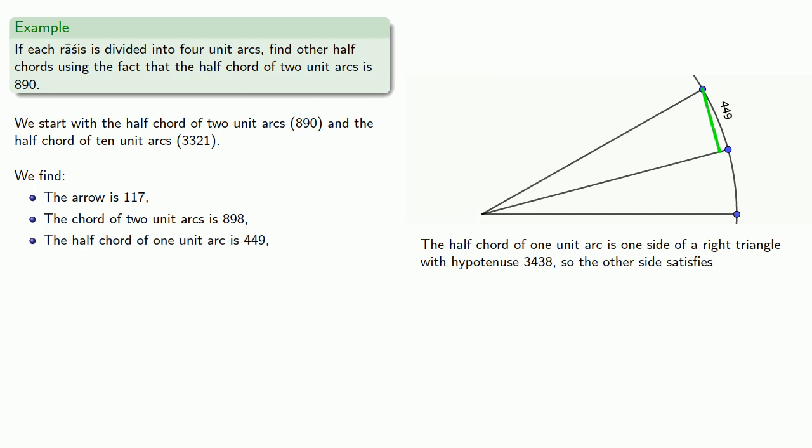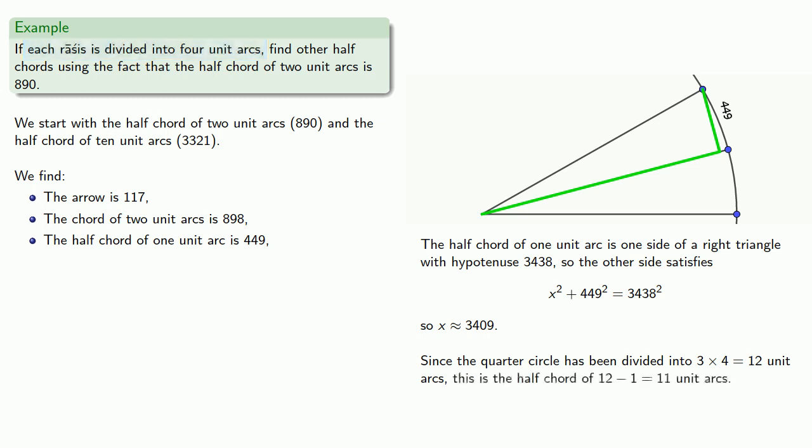And again, the half chord of one unit arc is one side of a right triangle, with hypotenuse equal to the radius, and so the other side satisfies. And since the quarter circle has been divided into 3 rases at 4 units apiece, 12 unit arcs, then this amount is the half chord of the complementary arc, 12 minus 1, 11 unit arcs.